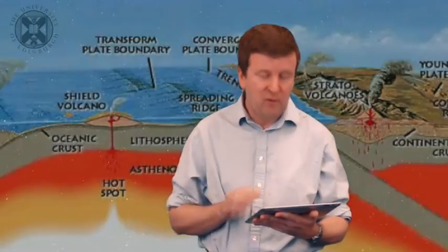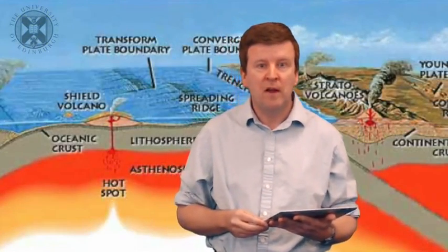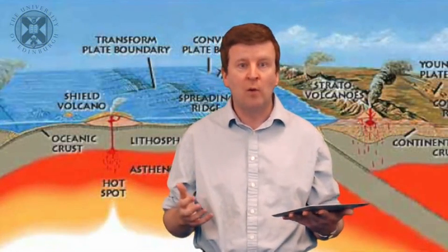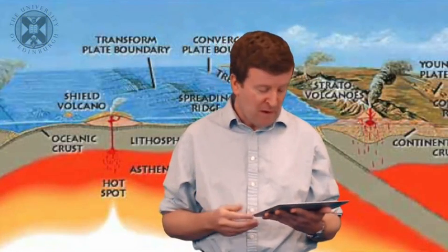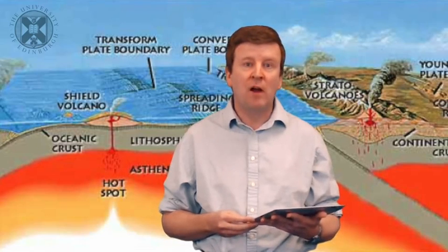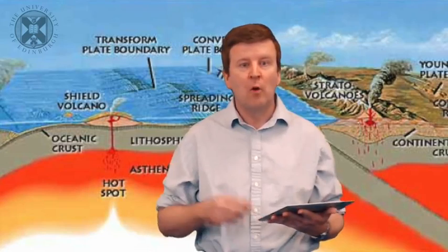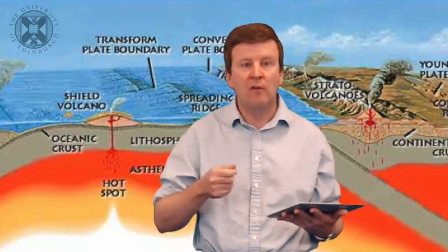There are other things that people have discussed that are required for habitability. And one of them is active geochemical turnover. If a planet's not geologically active, eventually nutrients and energy sources will be used up for life and the planet will essentially run down. There will be no new energy supplies, no new nutrients. We need active geochemical turnover.